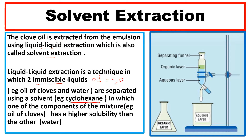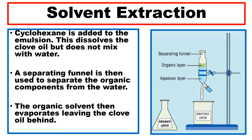In the separating funnel, the organic layer — cyclohexane — sits on top, and the aqueous layer — water — is on the bottom. Cyclohexane is added to the emulsion; it dissolves only the clove oil but does not mix with the water. A separating funnel is used to separate the organic components from the water, and the organic solvent then evaporates leaving the oil behind.